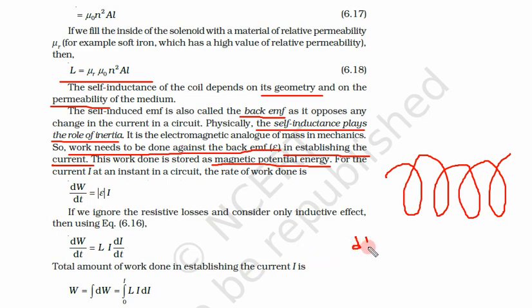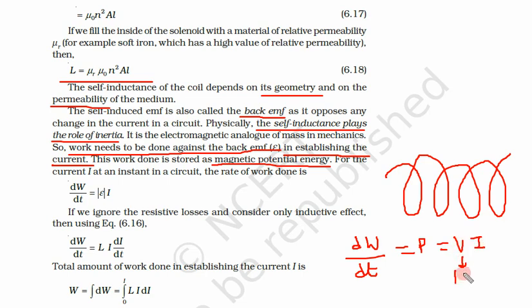The rate of work done — work upon time — is equal to power. Power is equal to V·i, where V is replaced by epsilon (EMF), so dW/dt = ε·i. We are ignoring resistive losses, assuming resistance R is very low.